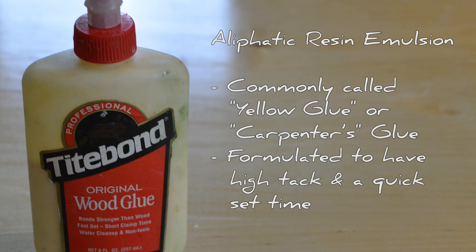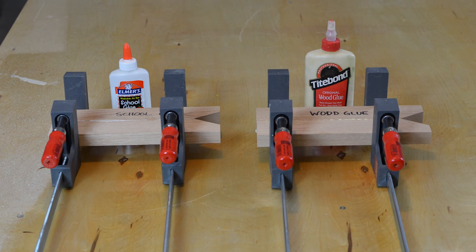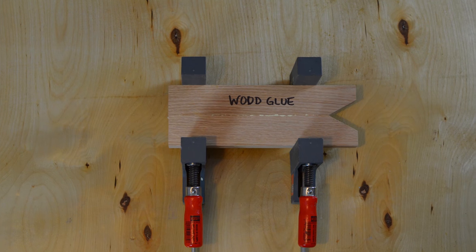Both PVA school glue and Titebond Type 1 are similarly priced. For this test, I glued up two pieces of red oak. One set was glued with school glue and the other with Titebond Type 1 glue.